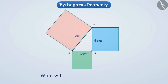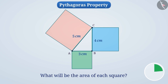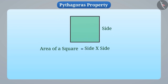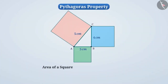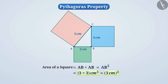Can you tell me what will be the area of each of these squares? Think for a while. The area of a square is equal to side multiplied by side, which we represent as side squared. Note that whenever you see 2 written above any number A, we call it the square of A, meaning A is multiplied by itself. So the area of the square with side 3 cm is AB² = 3² = 3 × 3 = 9 cm².